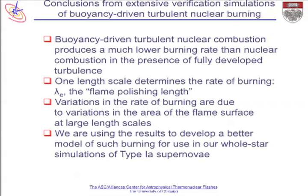At larger length scales than this critical scale, the laminar flame speed is high enough to smooth out any little perturbations. At smaller length scales it's not. So this really is a key parameter in determining the burning rate. We also discovered that the overall changes in burning rate are happening at the very largest scales, and we're using these insights to build a subgrid model that captures all the key physics for use in our large-scale simulations.